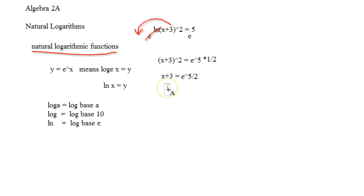And then we just minus 3 from both sides, so x equals e to the 5 halves minus 3, and I wasn't kidding when I said you're going to get some funky looking numbers for this section.